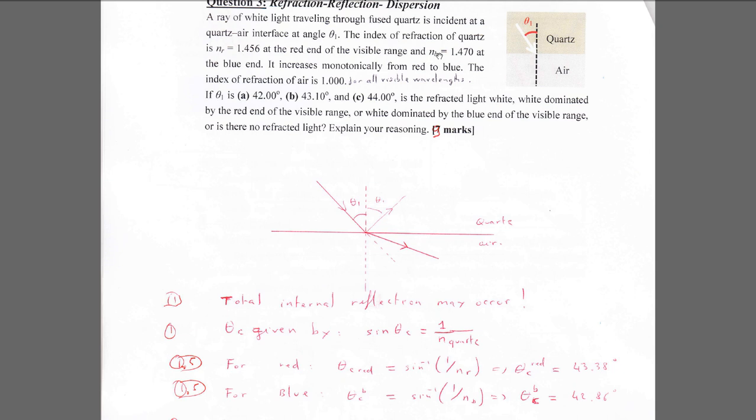They give the index for blue and the index for red. We calculate the two critical angles: for red light we get 43.38 degrees, and for blue light we get 42.86 degrees.